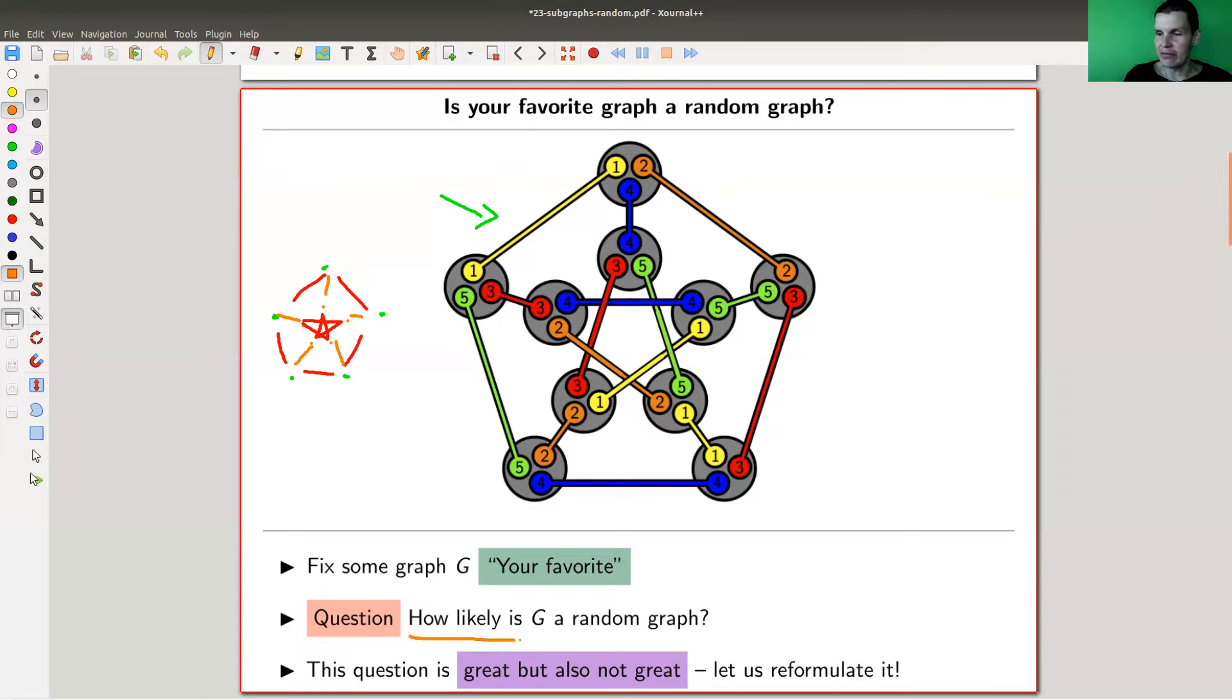Here's a question: how likely is your favorite graph to be a random graph? Essentially, we have a measurement of what is random, and we check whether that's random or not. So that's a really good question because it's trying to say something about properties of random graphs, but it's also a really bad question.